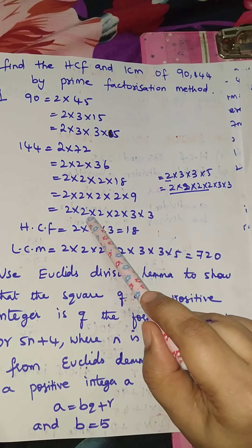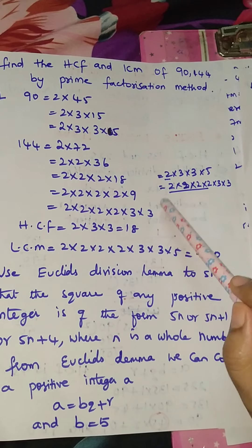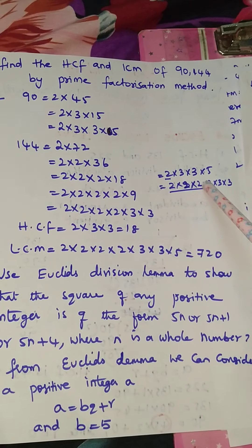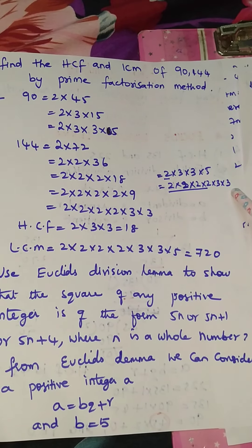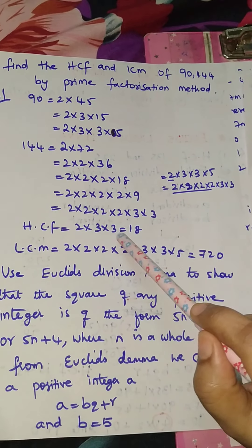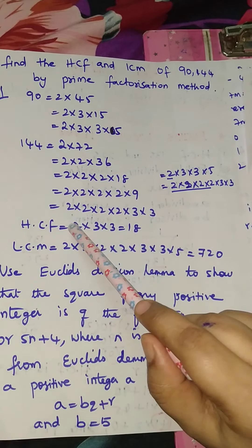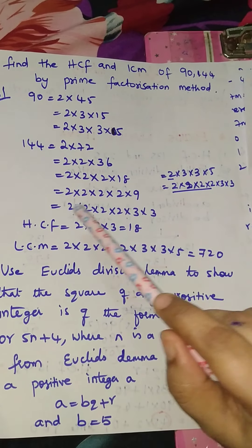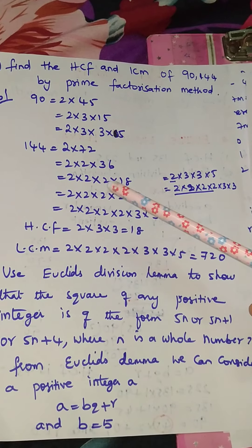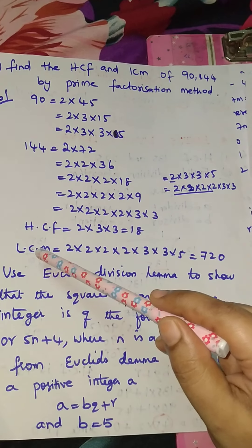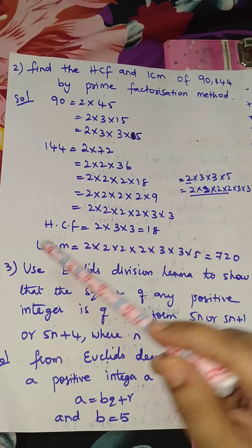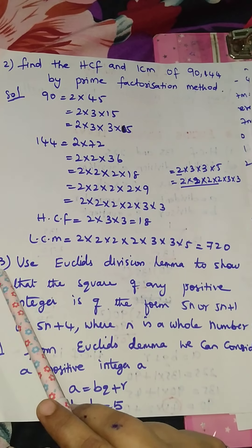For HCF, identify the common factors: 2 is common, 3 is common, and 3 is common again. So HCF equals 2 into 3 into 3, which equals 18. The LCM is shown in my previous video — you can watch that and you will get the same answer.